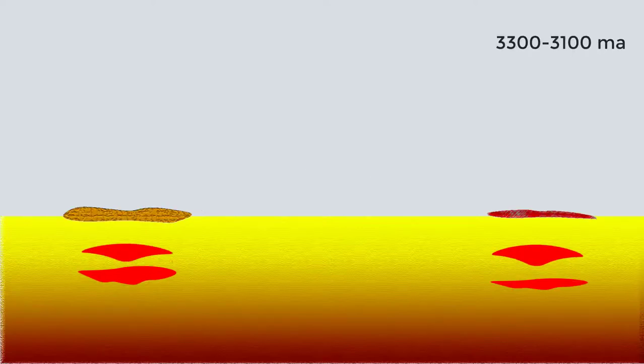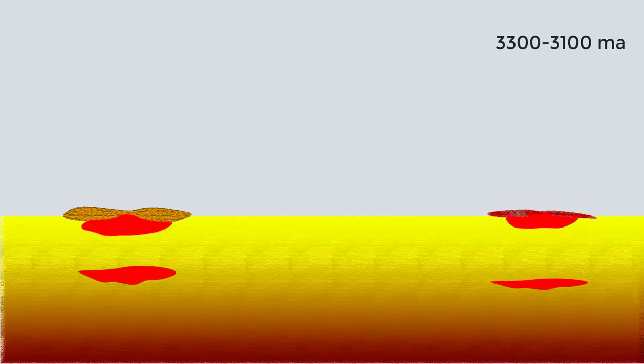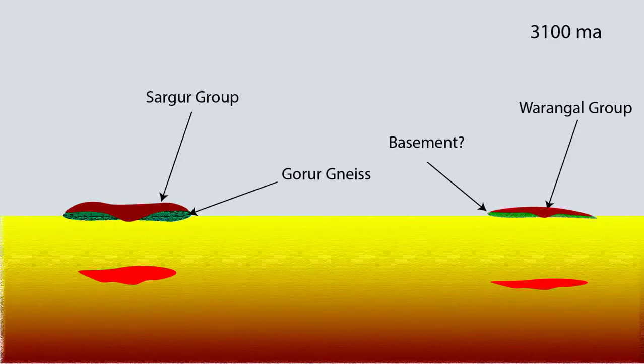About the same time Sargur Group formed, Warangal Group deposited in similar fashion, but what formed the basement to these is not quite clear. With the deposition of Sargur Group in Western Dharwar Craton and Warangal Group in Eastern Dharwar Craton, one cycle of crust formation was over.